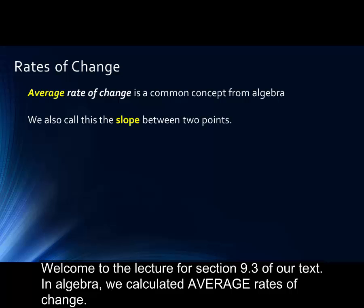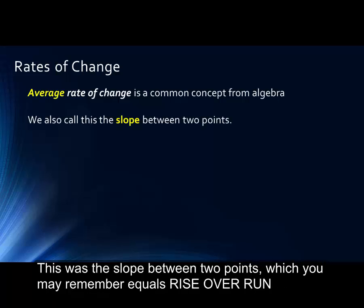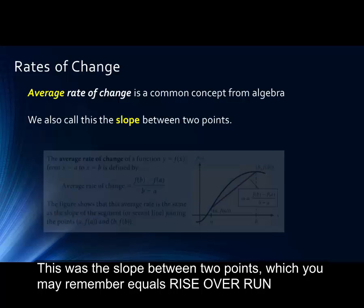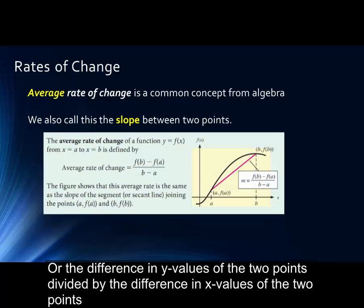This was the slope between two points, which you can remember equals rise over run, or the difference in y values of the two points divided by the difference in x values of the two points.